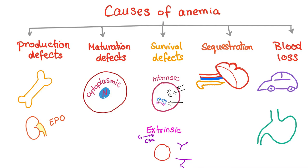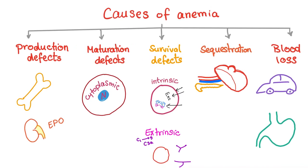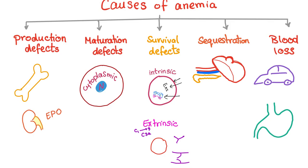Extrinsic survival defects include antibodies against the red blood cell, or mechanical damage such as when the RBC passes through a faulty valve and gets sheared — we call this macro-angiopathic hemolytic anemia. RBCs may also be damaged by the complement cascade attacking them.